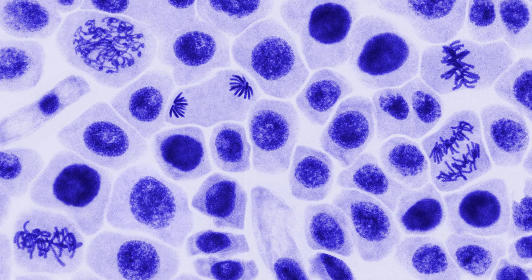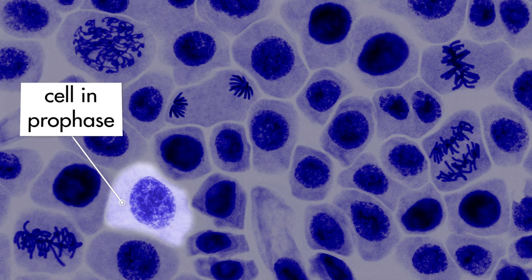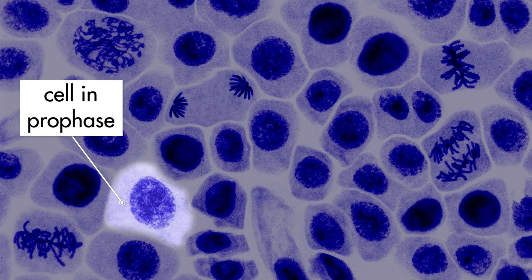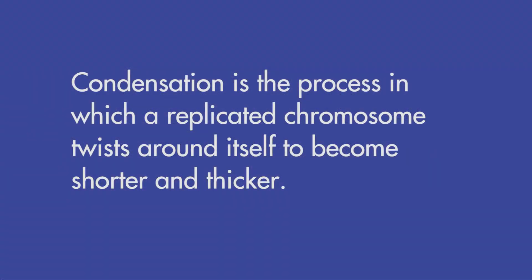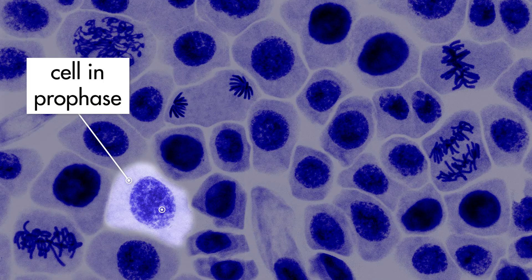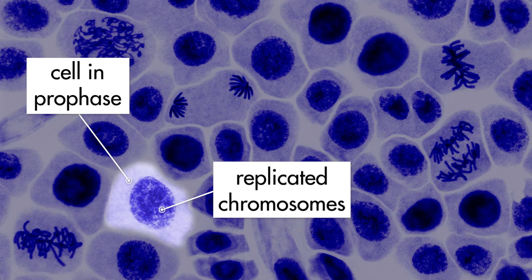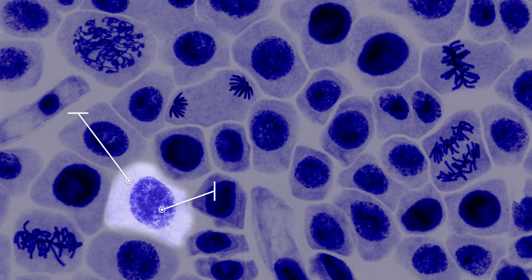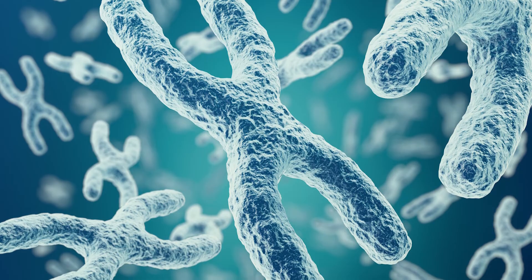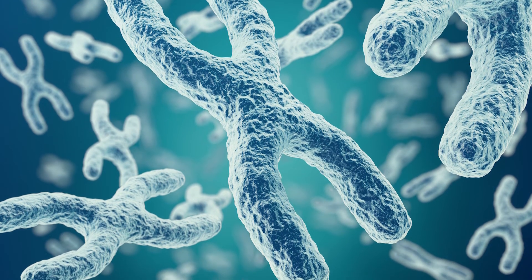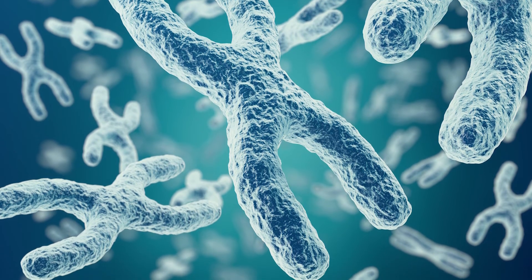During prophase, each replicated chromosome undergoes condensation. Condensation is the process in which a replicated chromosome twists around itself to become shorter and thicker. At this point, the replicated chromosomes are thick enough to be visible under a microscope. Each chromosome looks like a letter X, but since the chromosomes are tangled together within the nucleus, it is difficult to see their shapes.